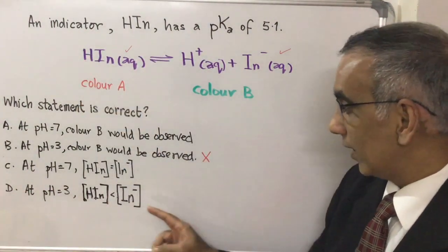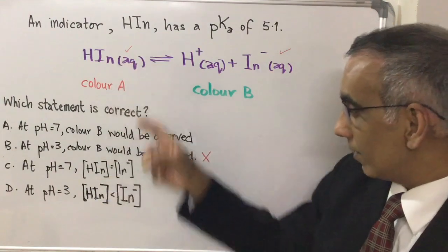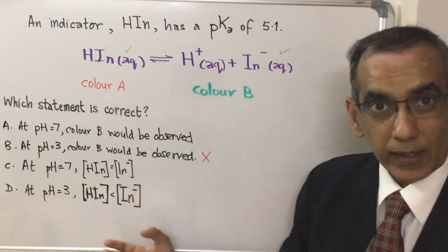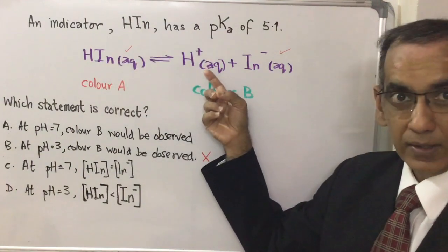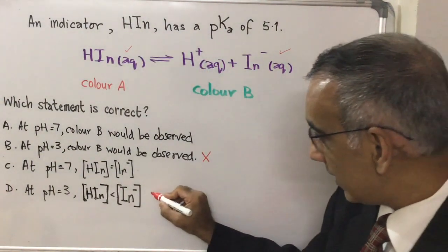So therefore you won't have this concentration being less than this. You will have this concentration being significantly higher than this. So you can also eliminate D.